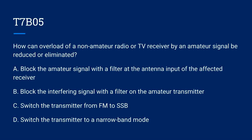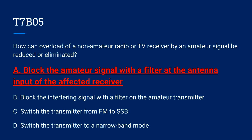T7B05. How can overload of a non-amateur radio or TV receiver by an amateur signal be reduced or eliminated? A. Block the amateur signal with a filter at the antenna input of the affected receiver. B. Block the interfering signal with a filter on the amateur transmitter. C. Switch the transmitter from FM to SSB. Or D. Switch the transmitter to a narrow band mode. The correct answer is A. Block the amateur signal with a filter at the antenna input of the affected receiver.